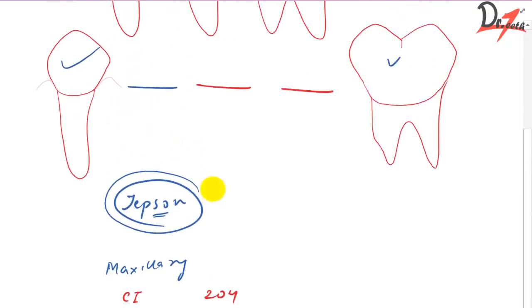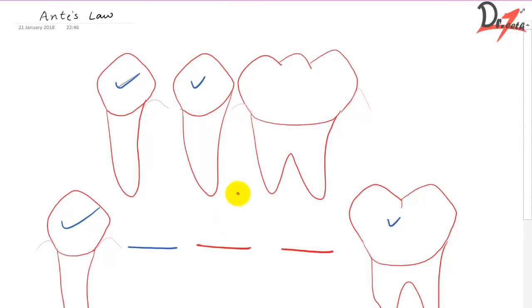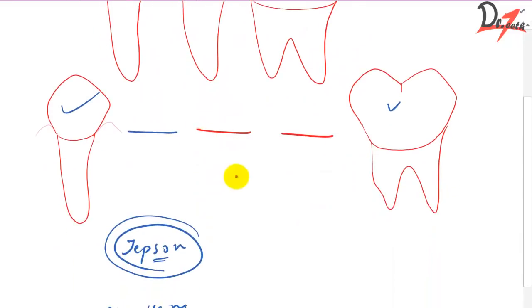So this value which is quite on the safer side. So the fixed partial denture can be successful with as little as one-fourth of the support which was told by Auntie.